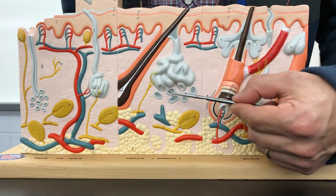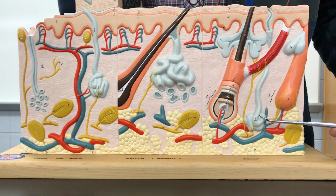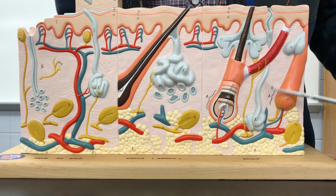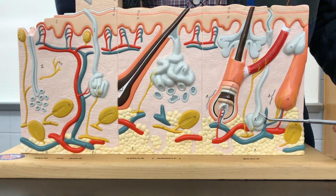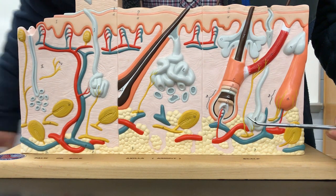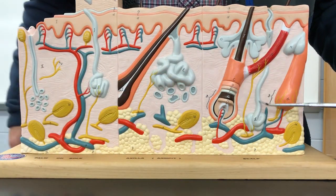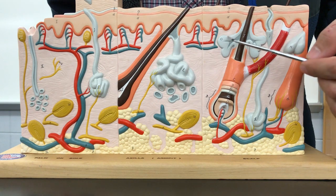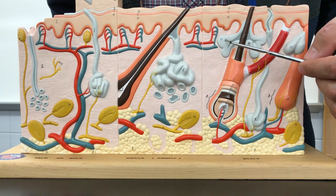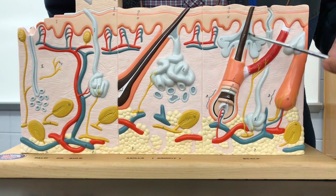Eccrine glands are found all over the body but are never attached to hair follicles — they can be next to them, but not attached. Sebaceous oil glands are always attached to hair follicles, found all over the body.